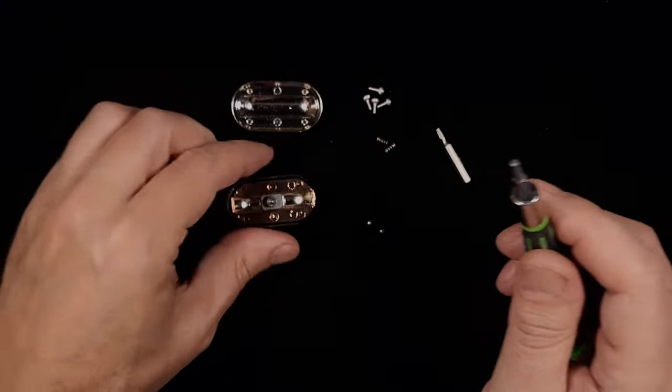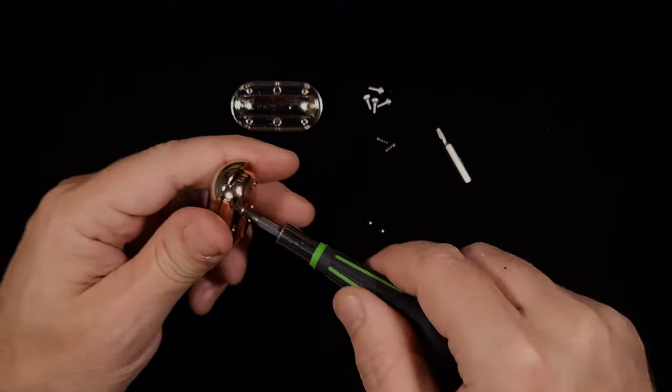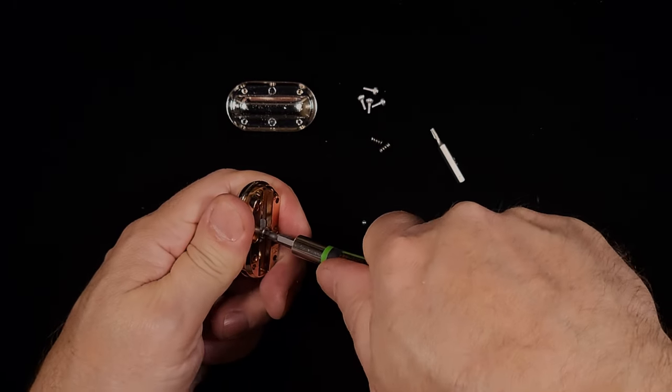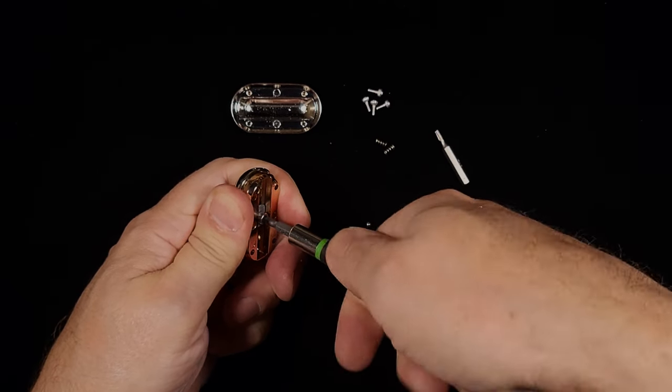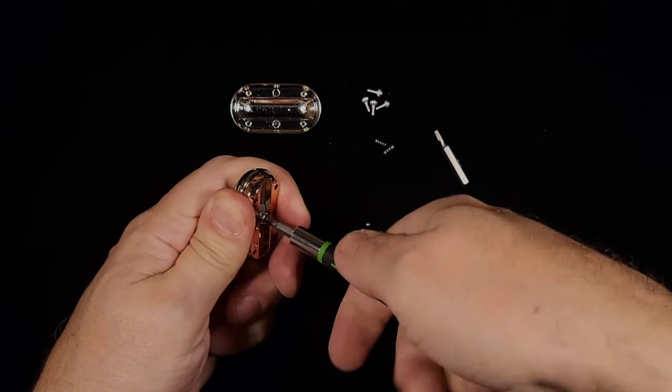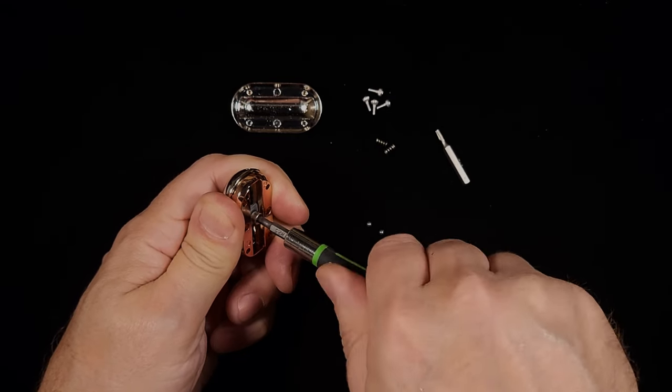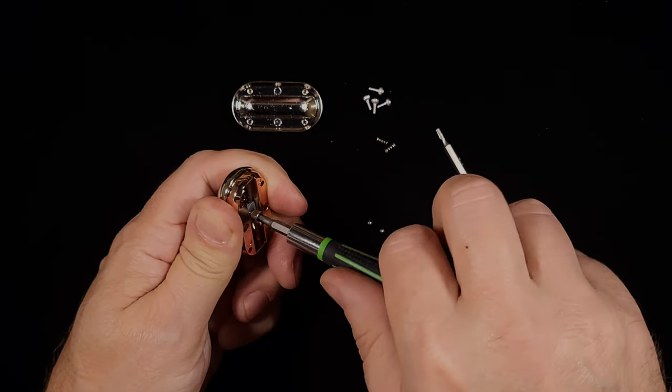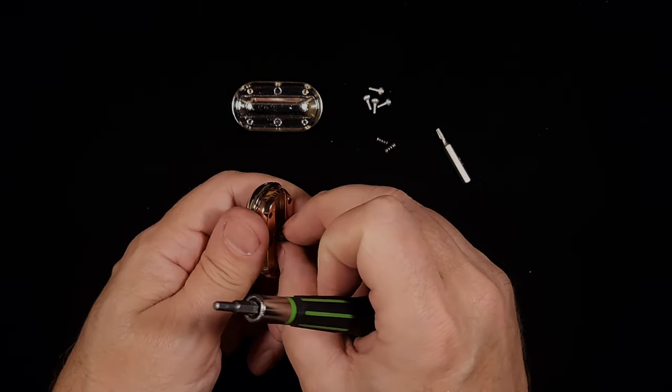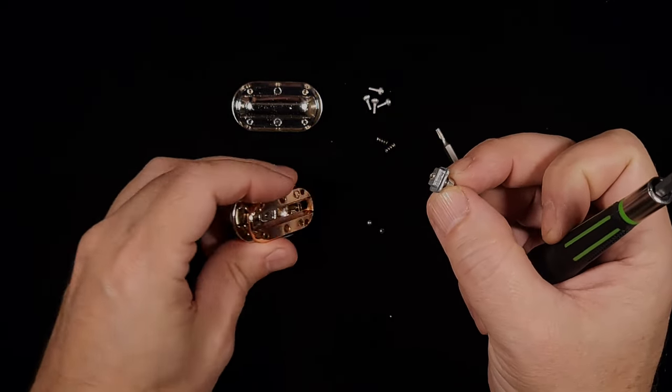I went out and looked and I found a metric 2.5 happens to be exactly the right size for that. They probably Loctited it. Okay, it's coming loose. Very slowly, it's getting looser. Now we're getting looser. I'll bet there's Loctite on there. Okay, we have separation.